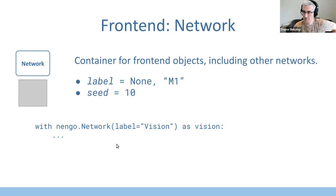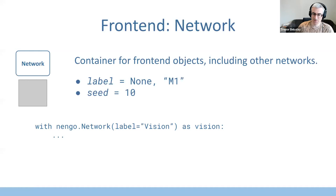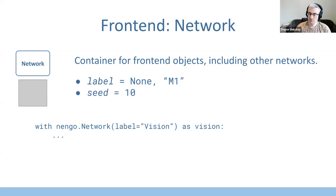A question from the chat: does Nengo have pre-trained models like TensorFlow? Yes. Unlike TensorFlow, a lot of Nengo models don't require training in the traditional sense of providing input/output examples — you'll see why in the next part of the talk. But for networks that do require training, we do have some pre-trained weights available. These are on various GitHub projects; there'll be links throughout the talk.